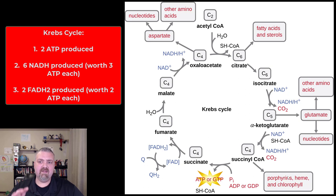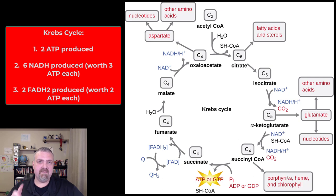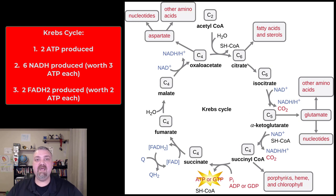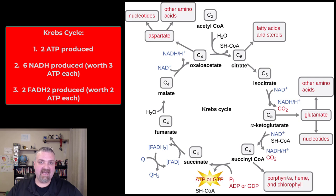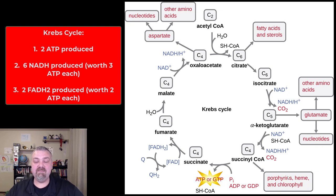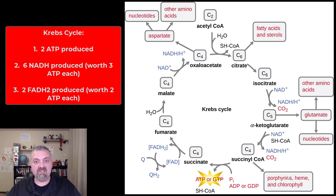Let's go through the Krebs cycle and talk about what the red words on the outside of the image mean. As you run through the citric acid cycle, remember you're doing it twice — so all the things you see on the screen would have to be doubled. You're going to make two ATP. You actually make two GTP, which are needed to make ATP, but we just say two ATP. You only see one being produced on screen, but it happens twice.